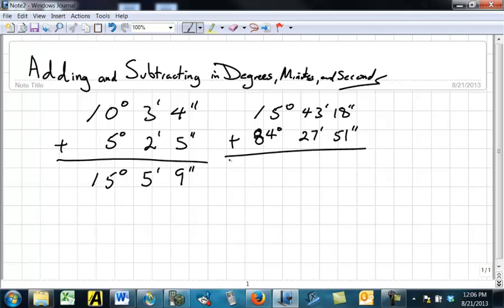15 degrees, 43 minutes, 18 seconds, plus 84 degrees, 27 minutes, and 51 seconds. Remember that the number of seconds has to always be less than 60, and the number of minutes is less than 60, because if we ever get 60 seconds, we'll regroup that as a minute, and 60 minutes we'll regroup as 1 degree.